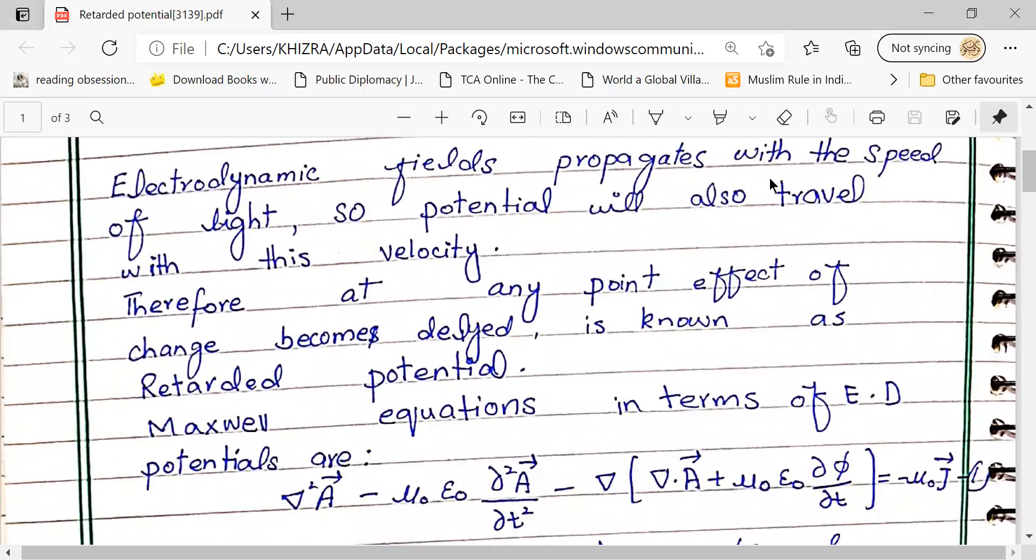Electrodynamic fields propagate with the speed of light, so potential will also travel with this velocity. That potential at any point - the effect of change becomes delayed is known as retarded potential. Now electromagnetic fields which we have will move at speed of light, so with these fields the potential should travel at speed of light with that velocity. So if potential delays, then we will call it retarded potential.